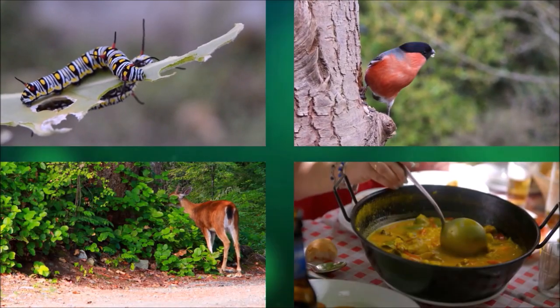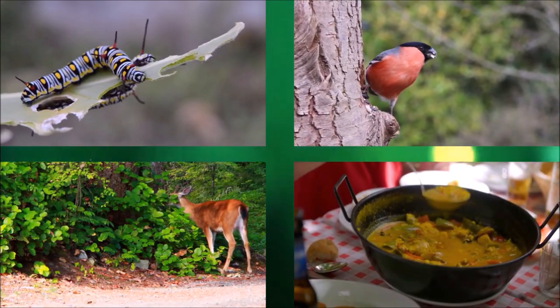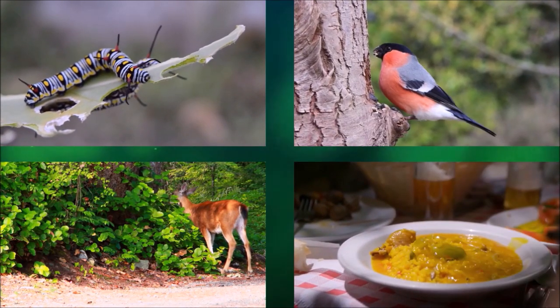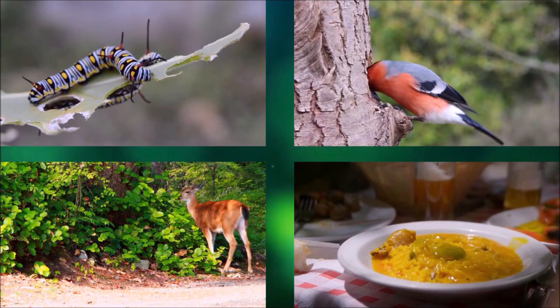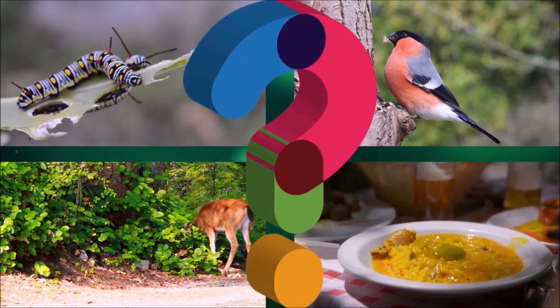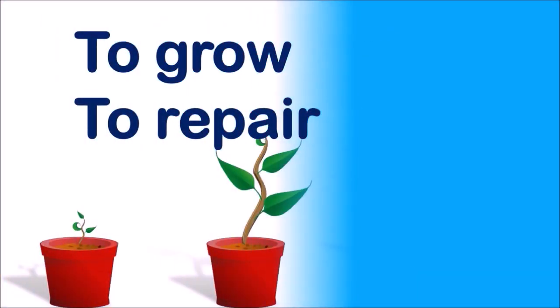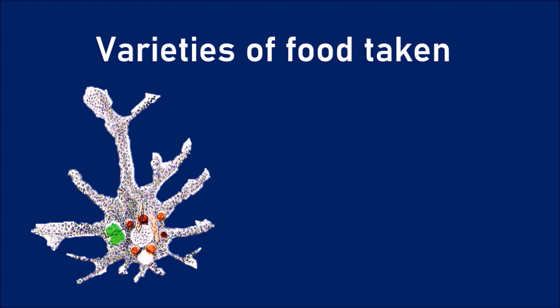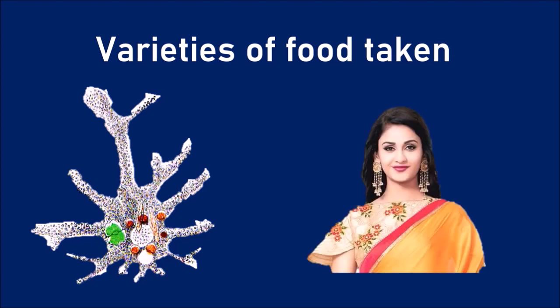Observe these videos in which different kinds of organisms are taking food — like a caterpillar, a bird, a deer, and a human being. Do we really need food? Yes, we need food to grow and to repair. In general, vast varieties of substances are taken as food, from unicellular organisms like amoeba to well-developed multicellular organisms like human beings.